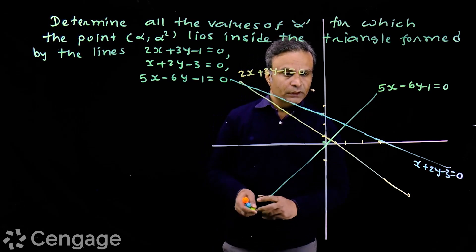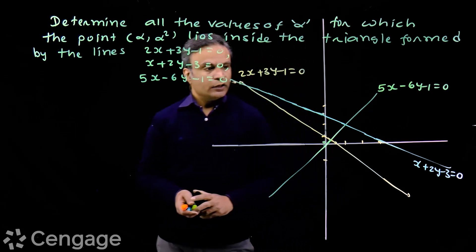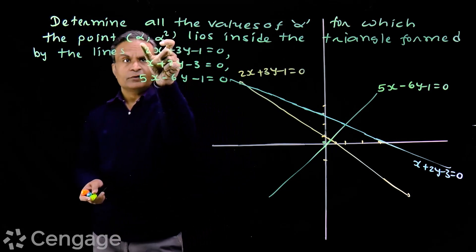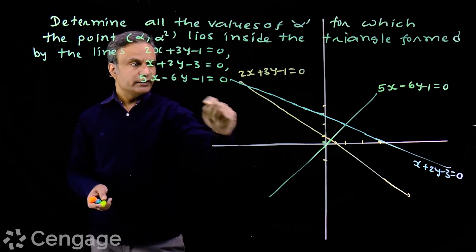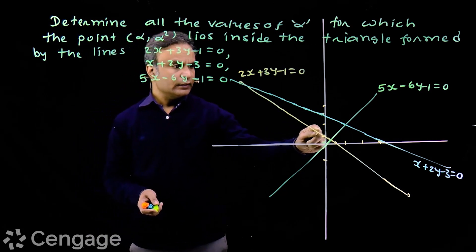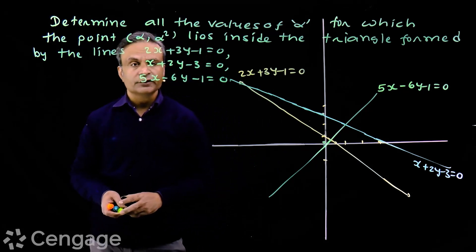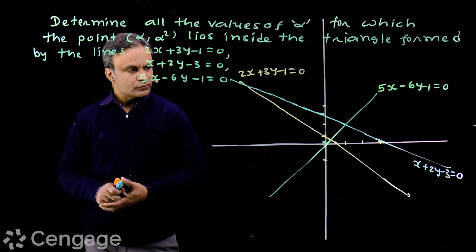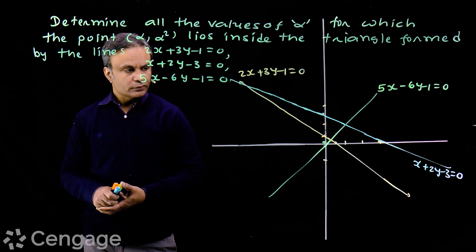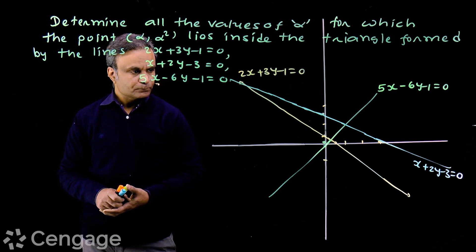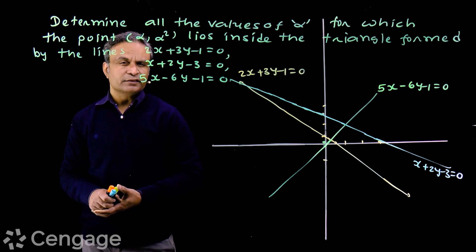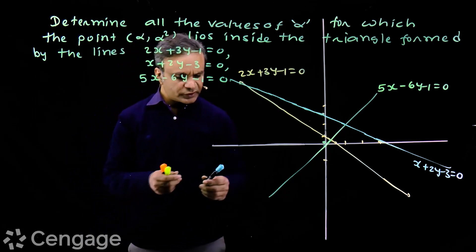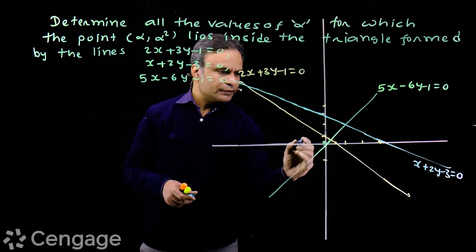Now we have to find the values of alpha for which this point lies inside this triangle. The simplest method is to consider the origin as a reference point.